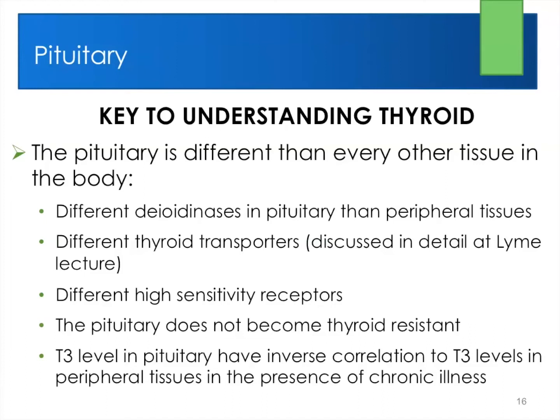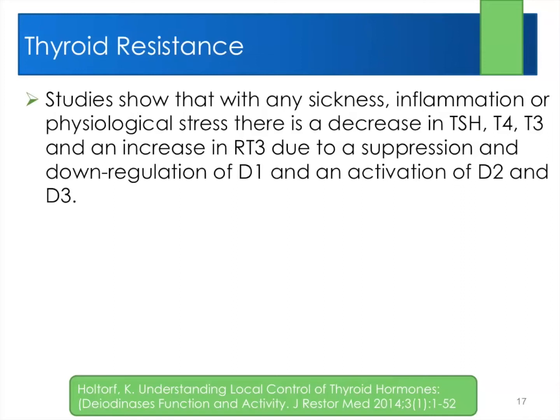Studies show that any sickness, inflammation, physiologic stress, or emotional stress will cause a decrease in TSH and decrease in T4 — though T4 usually stays the same because it doesn't get into the cells with more inflammation. T3 goes down, then you get an increase in reverse T3. You get a down-regulation of deidinase type 1, which is the main deidinase that converts T4 to T3 in the body. Type 2 converts in the pituitary, and type 3 converts T4 to reverse T3, which then blocks the thyroid and makes everything worse.